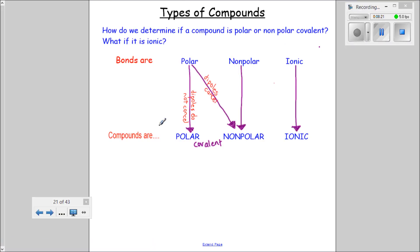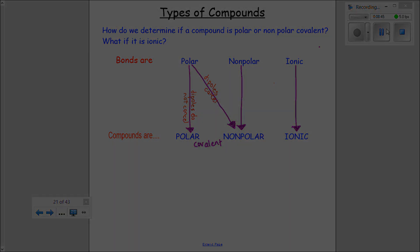In summary, this is how it works. If you have nonpolar bonds, you are a nonpolar molecule. If you have ionic bonds, you're ionic. If you're polar and the dipoles do cancel out, you're nonpolar. If they do not cancel, you are a polar covalent compound. That's it. Hope you enjoyed the video and ask me if you have any questions tomorrow in class. Enjoy your evening.